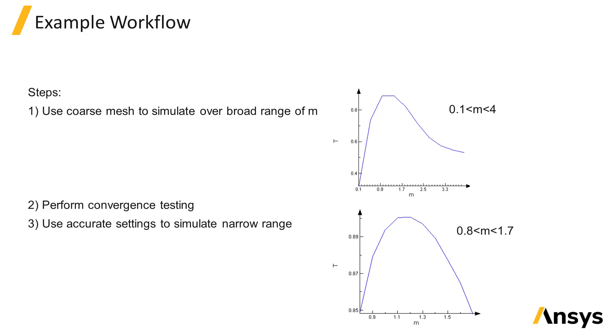To make sure that the results will be accurate, we can perform convergence testing on a single design to determine the settings which result in the required level of accuracy. We can then use these higher accuracy settings to run a second sweep over a smaller range of m values that we identified from the first sweep to get the final value of m that maximizes transmission through the taper.